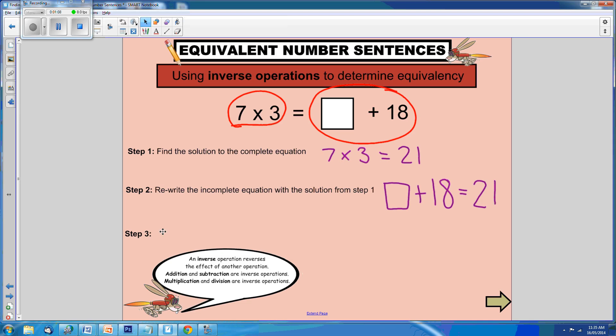Step 3: We now need to use inverse operations to get the answer to the incomplete equation. We know that addition and subtraction are inverse operations. So to find the solution here, we can simply do 21 take away 18, which equals 3.